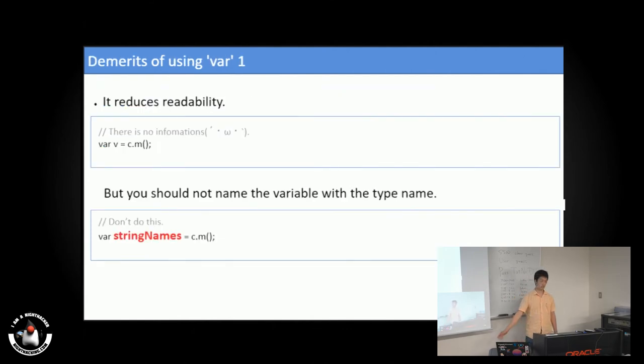And next, I talk about the demerits. It reduces readability. In this code, I don't know what type will be returned. And even if I know what type comes back, this code name is not good.